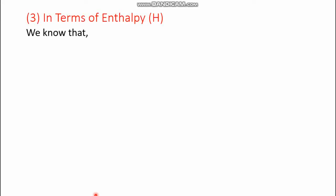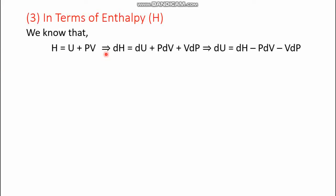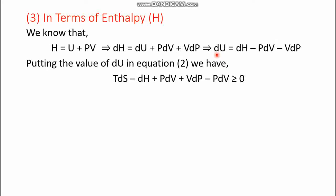In terms of enthalpy, we start from H = U + PV, so dH = dU + PdV + VdP, giving dU = dH - PdV - VdP. Substituting this into equation 2 in place of dU, and noting that the +PdV and -PdV terms cancel, we obtain equation 3: TdS - dH + VdP ≥ 0.